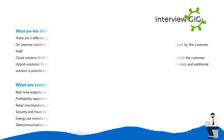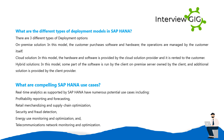What are the different types of deployment models in SAP HANA? There are three deployment options. On-premise: the customer purchases software and hardware and manages operations themselves. Cloud: hardware and software is provided by the cloud solution provider and rented to the customer. Hybrid: some part of the software runs on the client's own on-premise server, and additional solutions are provided by the cloud provider.